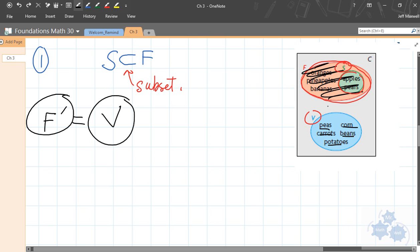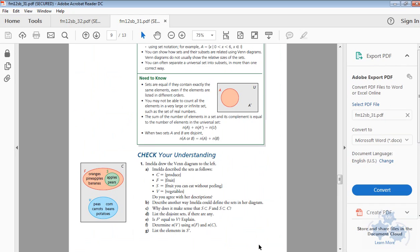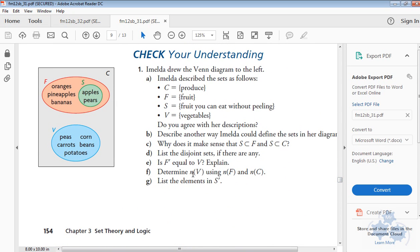All right. F says, determine n of V. So if we go back to this, let's go back to the question here. Determine n of V, which means what? What does that n, what does that little n mean? Jessica, what does that mean? Yeah, the number of items in V, and the number of items in F, and the number of items in C. So what is n of V? Well, one, two, three, four, five. n of V is five. What's n of F? Jing, what's n of F? Yeah. One, two, three, four, five. And what is n of C? Ten. Yeah. It's five plus five. That's everything inside of C is ten. Pretty easy stuff.